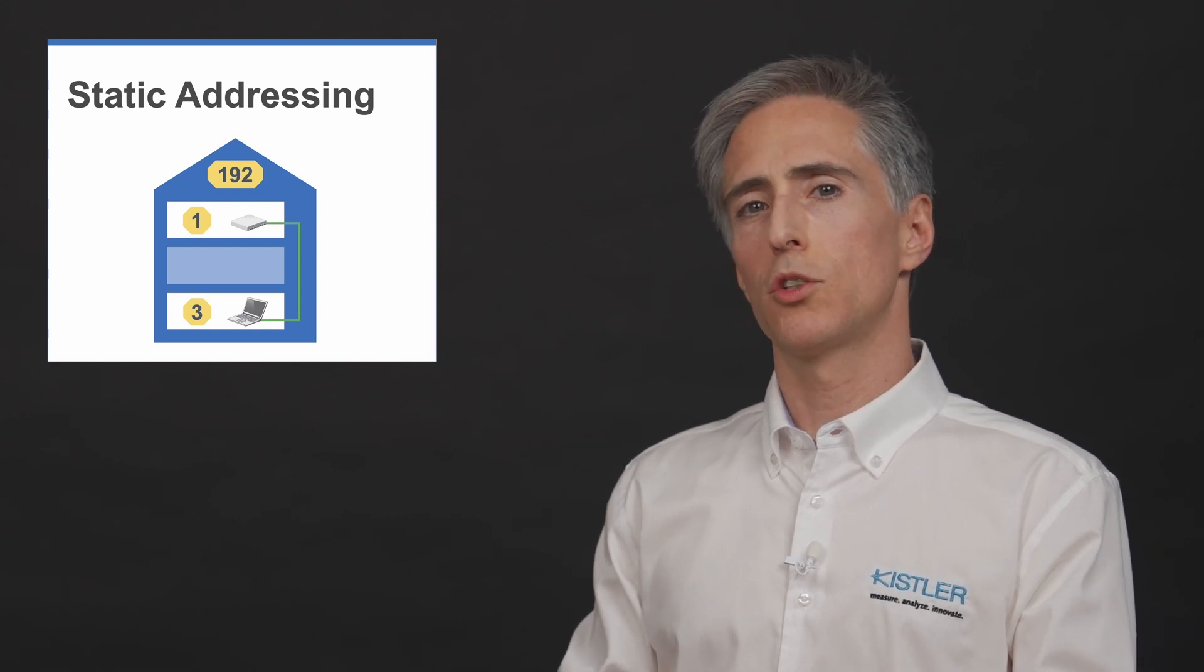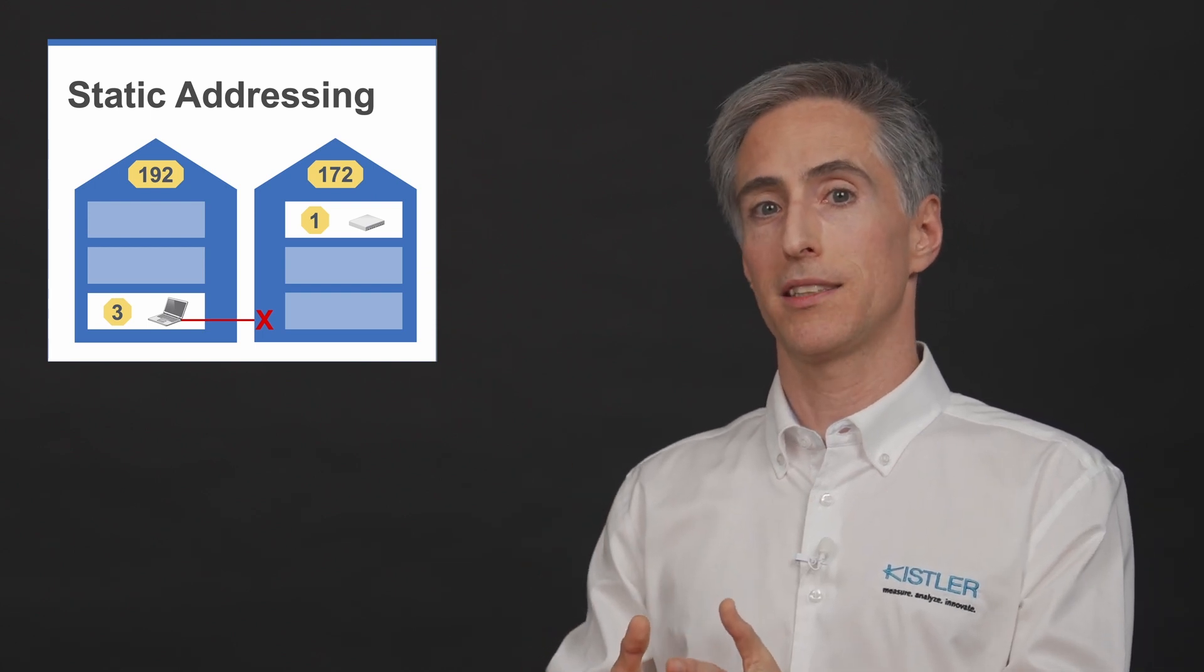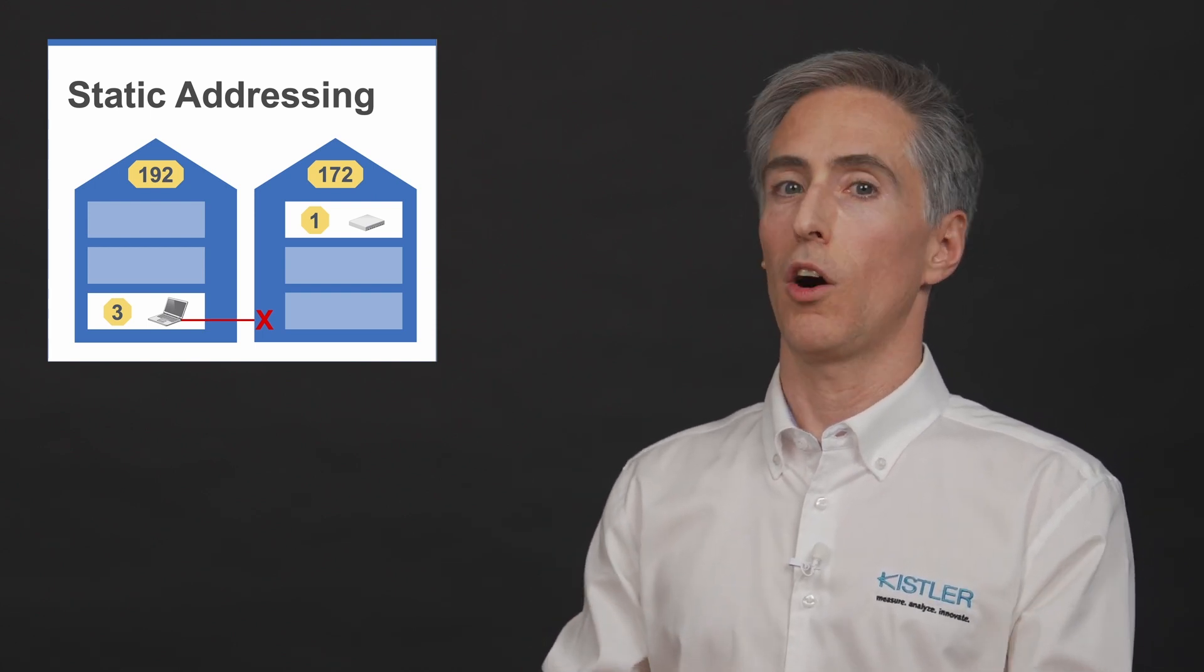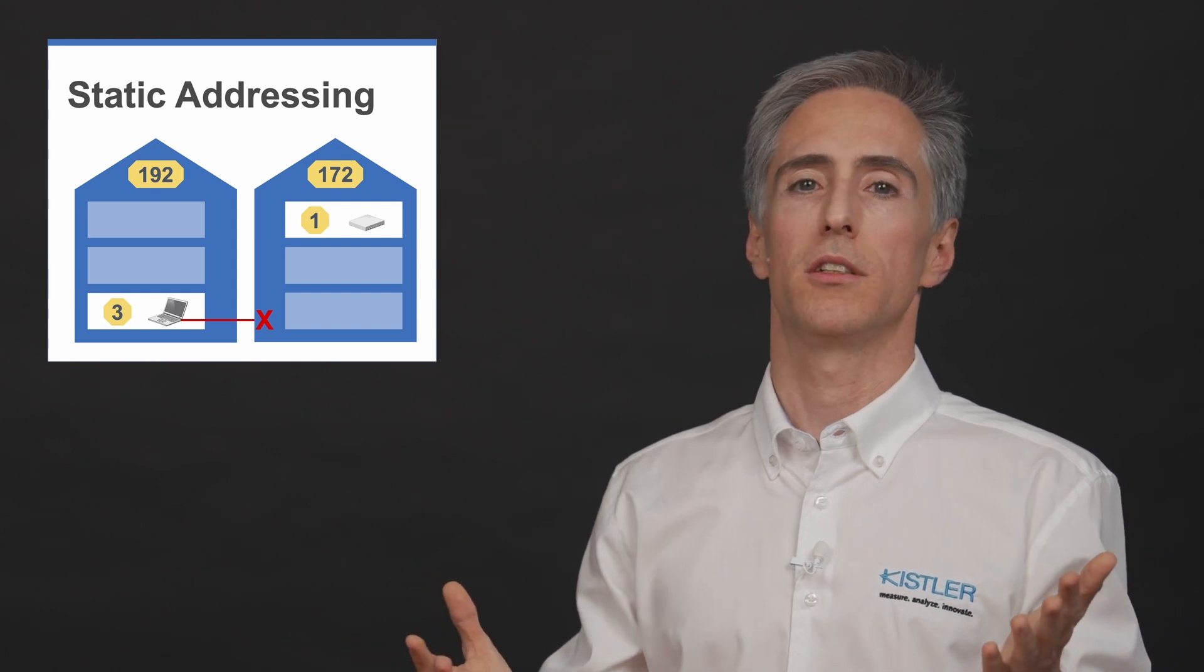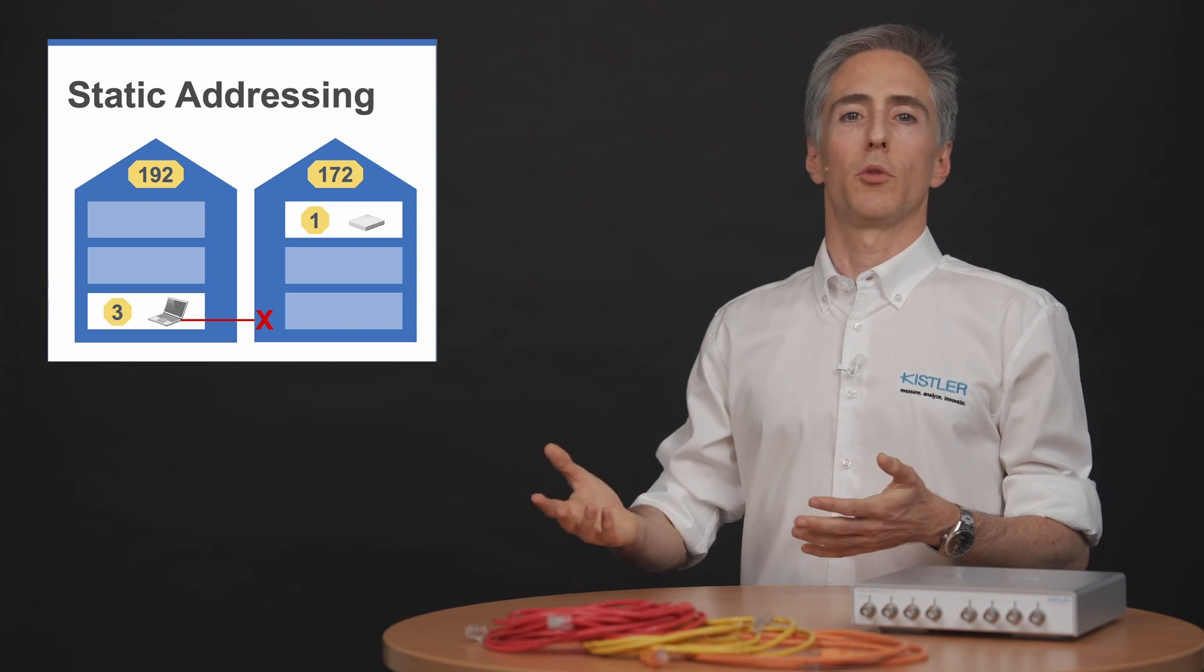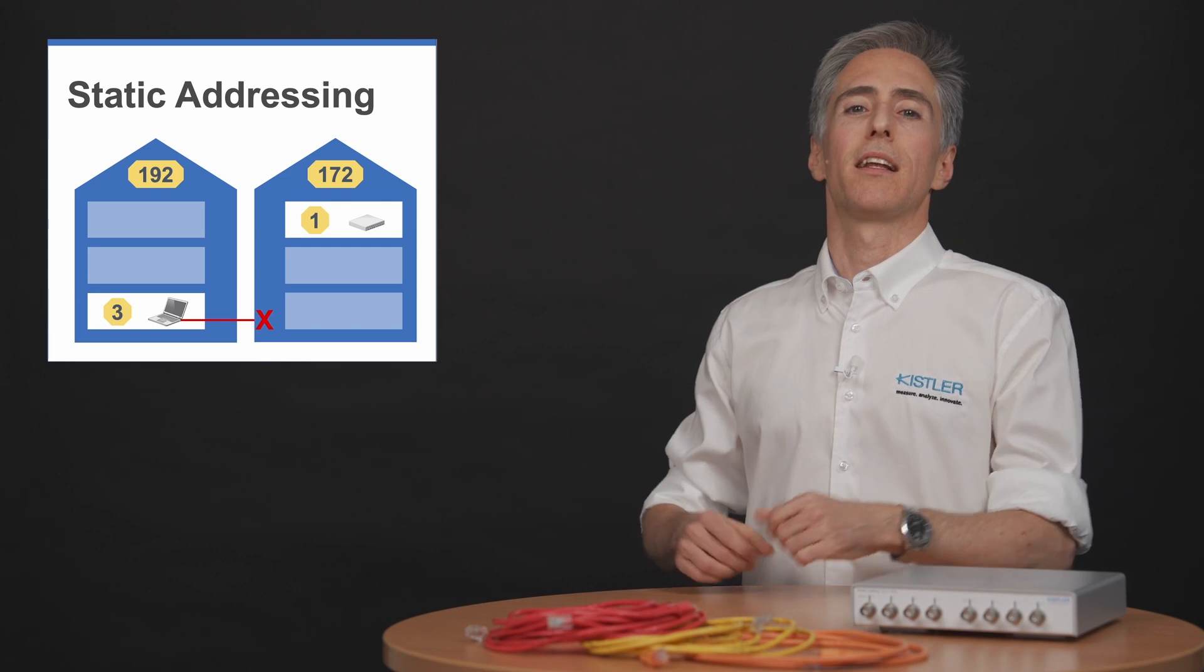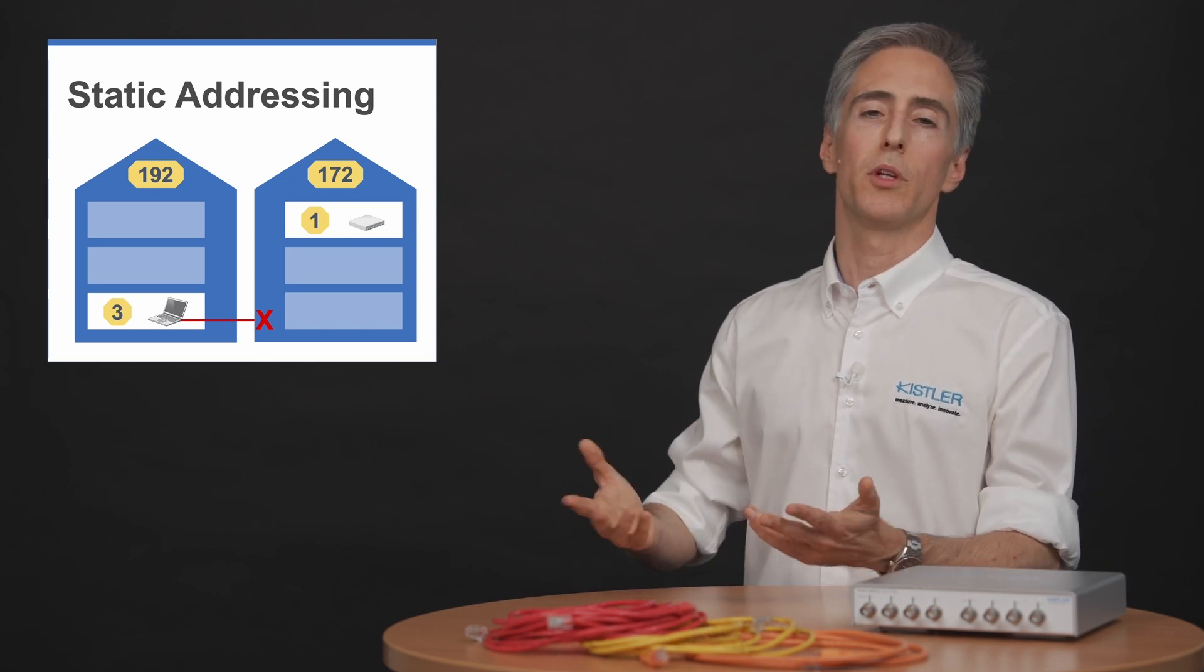You have to make sure though that not only the devices but also your computer has a static address in the same address range. Otherwise, no communication. You also can't just walk to an apartment in another building when the main door is locked. Inside your own building you can easily walk to your neighbor's door and communicate.